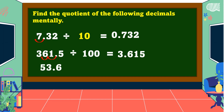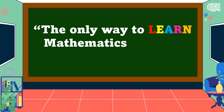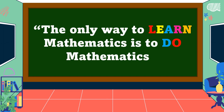Another example: fifty-three and six-thousandths divided by one-thousandth. In dividing decimals by one-thousandth, move the decimal point three decimal places going to the left, and the answer is equal to five-hundred-thirty-six ten-thousandths. I hope you understand our lesson for today. The only way to learn mathematics is to do mathematics.